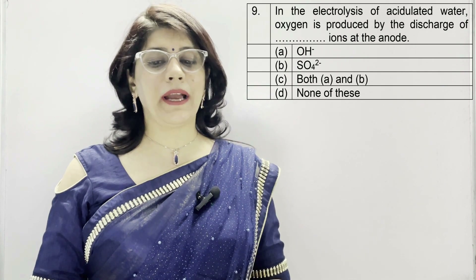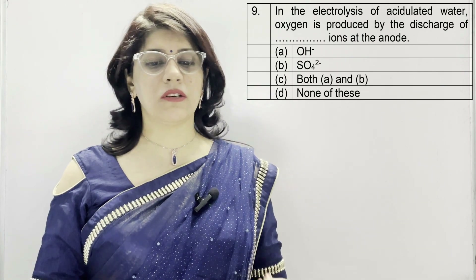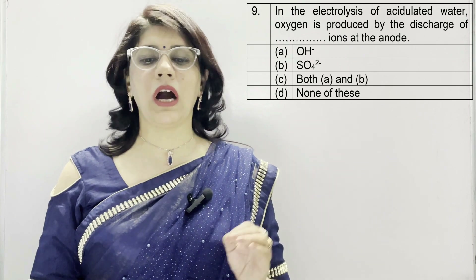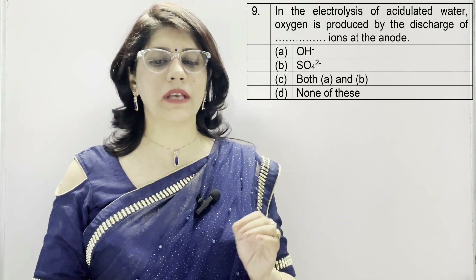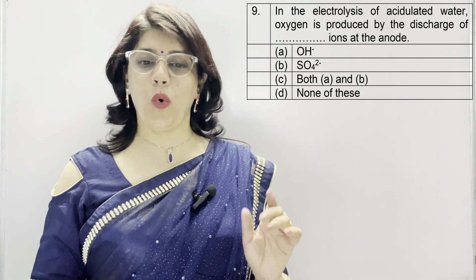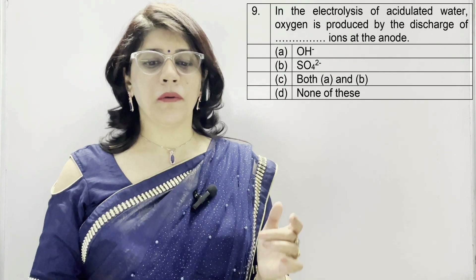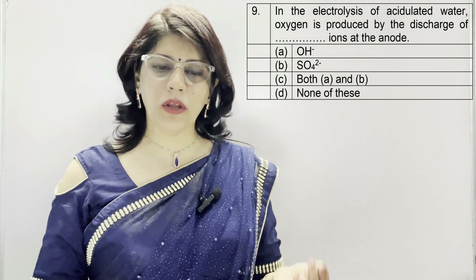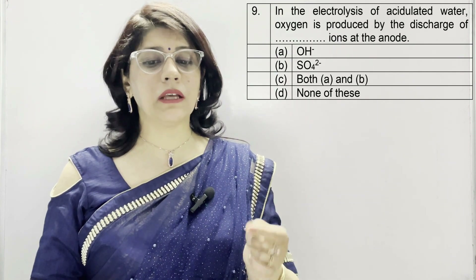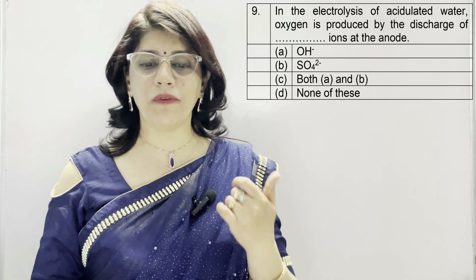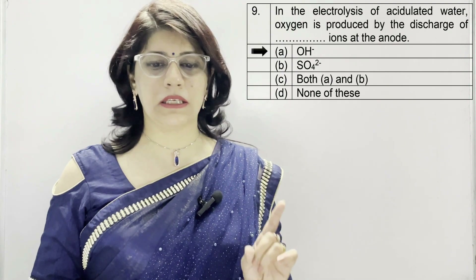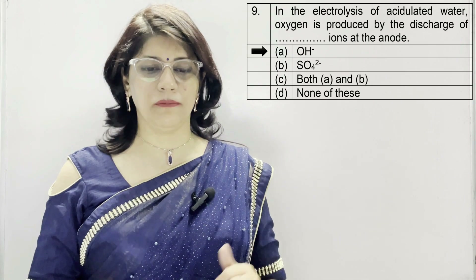Coming to the next question: in the electrolysis of acidified water, oxygen is produced by the discharge of dash ions at the anode. Option A: OH minus hydroxide. B: sulfate. C: both A and B. D: none of these. The correct option is A — OH minus hydroxide ion.